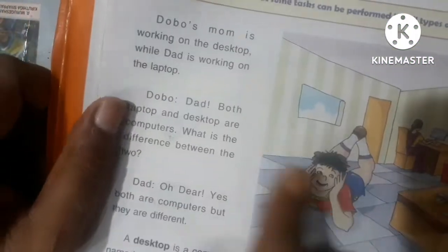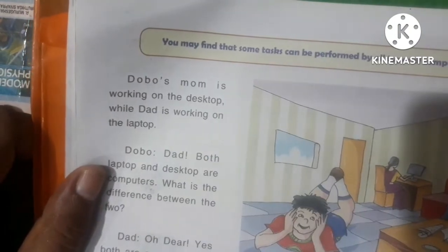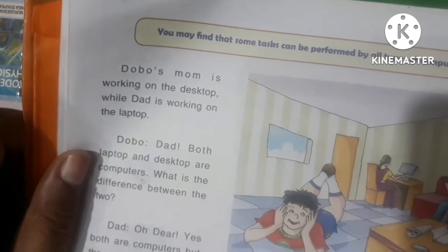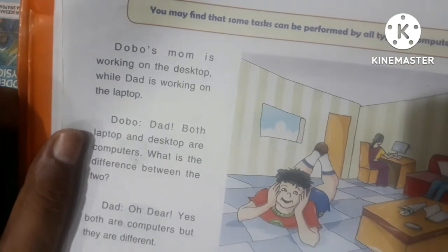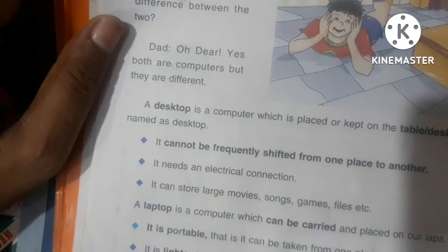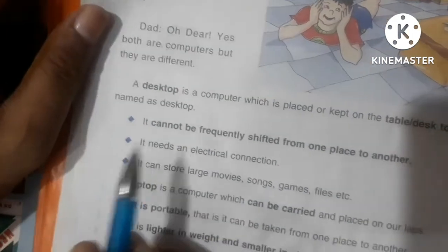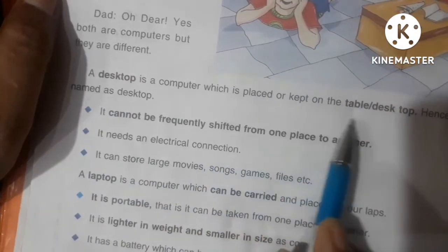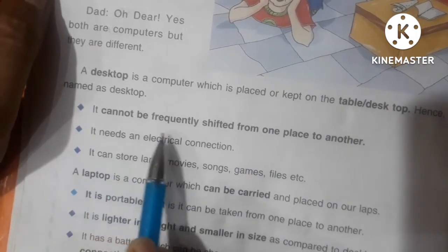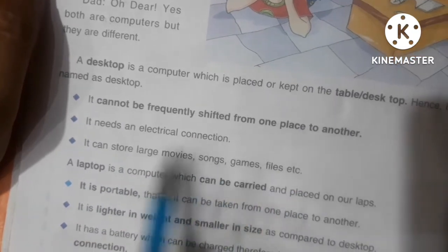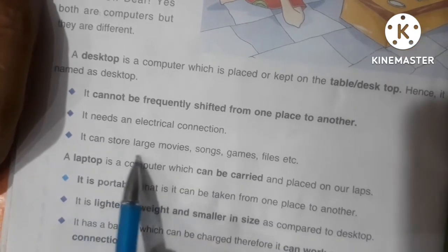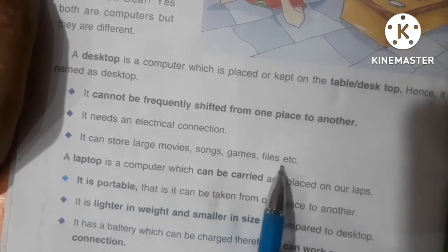You may find some tasks can be performed by all computers. Computers are used for different types of tasks. A desktop is a computer which is placed or kept on a table — hence it is named desktop. It cannot be frequently shifted from one place to another. It needs an electrical connection. It can store large movies, songs, and games — its storage capacity is very large.